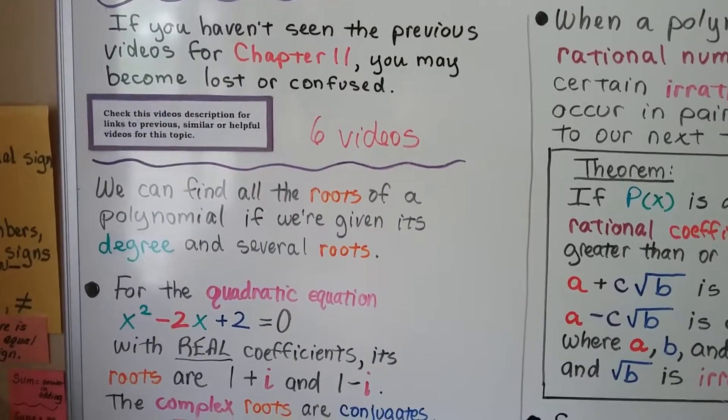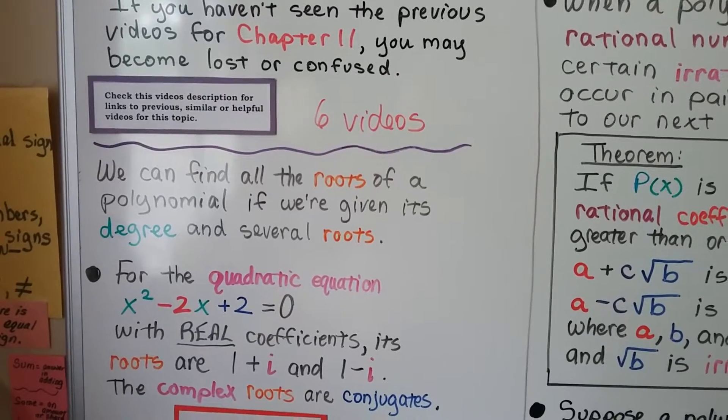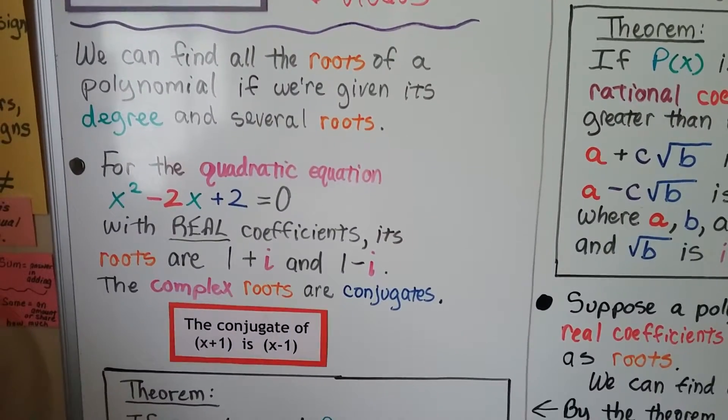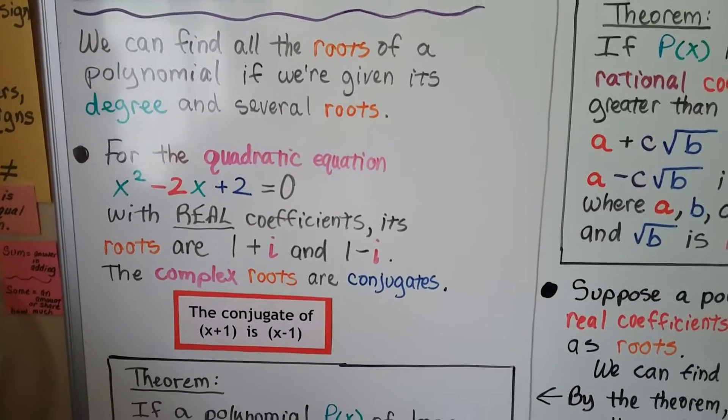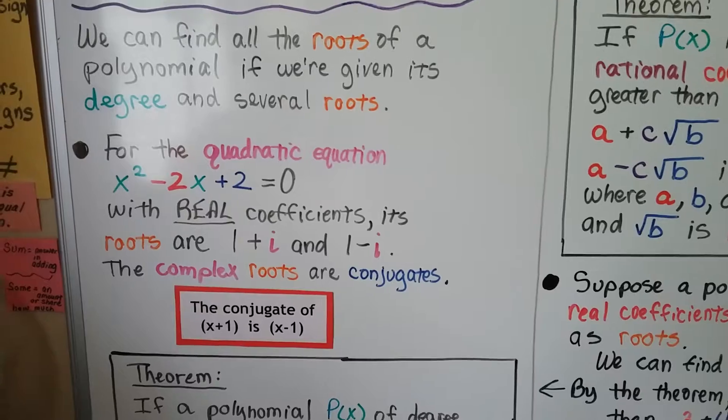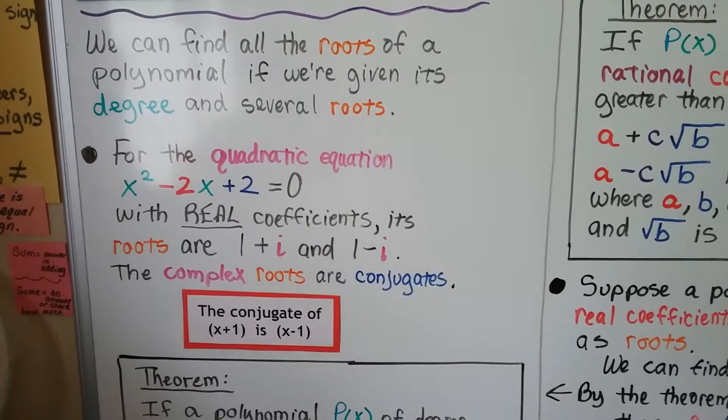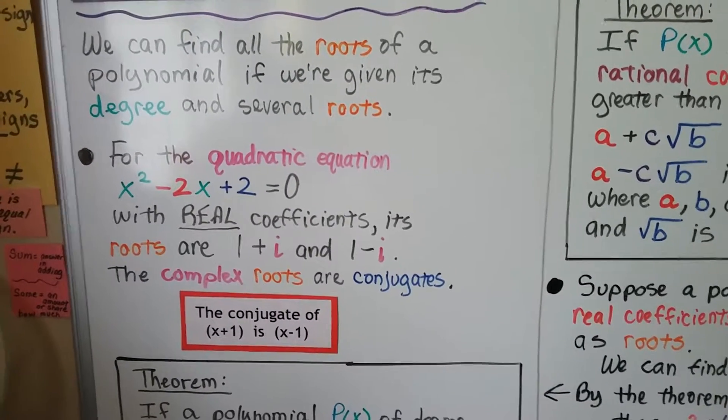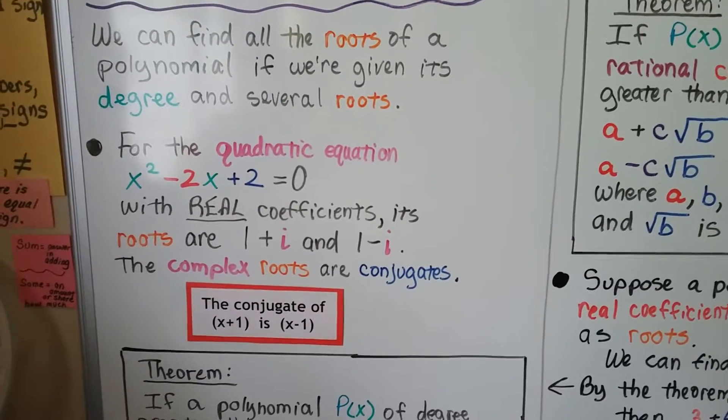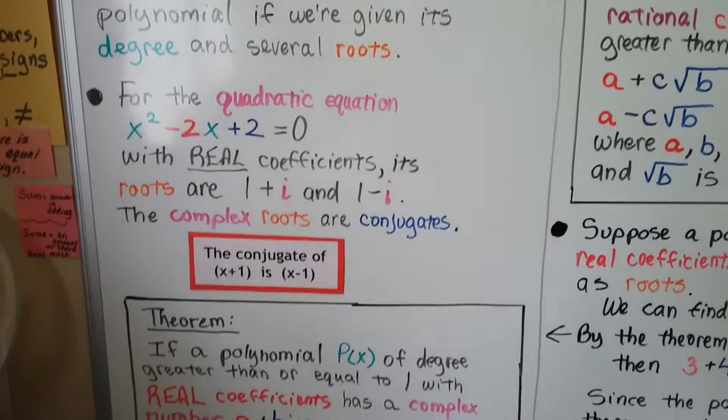We can find all the roots of a polynomial if we're given its degree and several roots. For the quadratic equation x squared minus 2x plus 2 equals 0 with real coefficients, its roots are 1 plus i and 1 minus i, and the complex roots are conjugates. You remember conjugates from chapter 7. The conjugate of x plus 1 is x minus 1. They're like opposites.